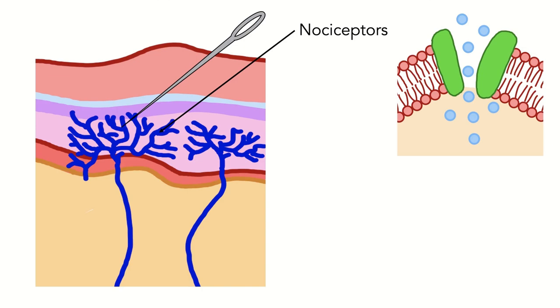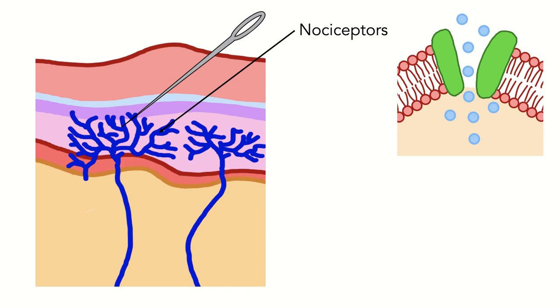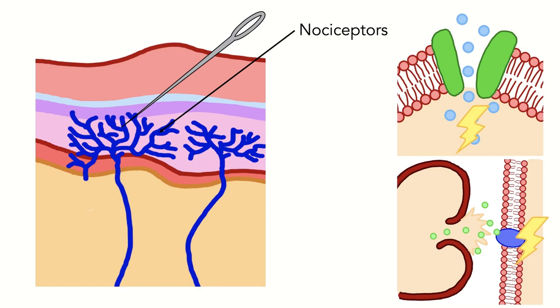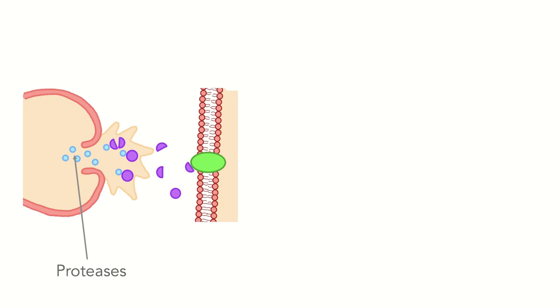The high pressure activates stretch-activated channels on the surface of the nociceptor, causing the influx of ions into the cell, activating it, while the chemicals released from the damaged cells bind to other receptors on the nociceptor, also inducing nociceptor activation. For example, if a cell is damaged, it will leak out proteases, proteins that can break down proteins. This protease will then cleave a protein called kininogen to form bradykinin, a molecule which can then bind to BK2 receptors on the nociceptor, which then activates the cell.